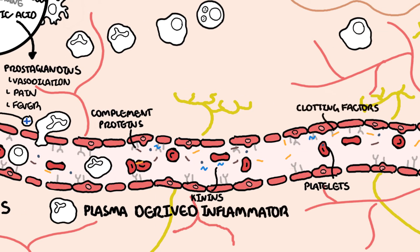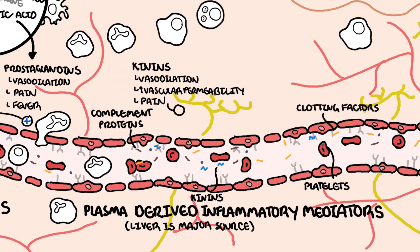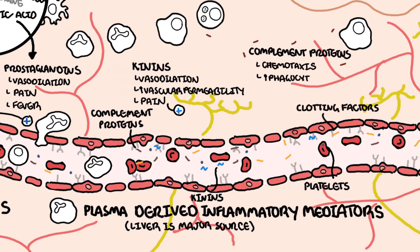The plasma-derived inflammatory mediators are mainly produced by the liver, and circulate in plasma, usually in an inactive form. They become activated during inflammation. These plasma-derived inflammatory mediators include the kinin system, which causes vasodilation, increases vascular permeability, and stimulates nerve endings causing pain. There is also the complement system proteins, which are important for chemotaxis, promoting phagocytic activity, and creating the membrane attack complex, which essentially kills pathogens.